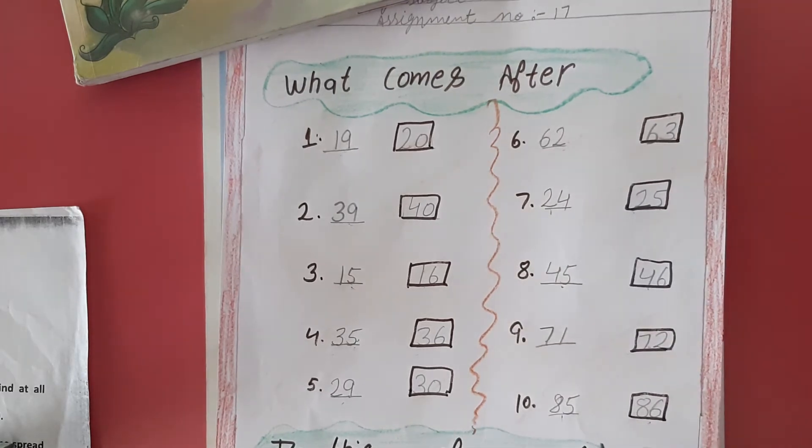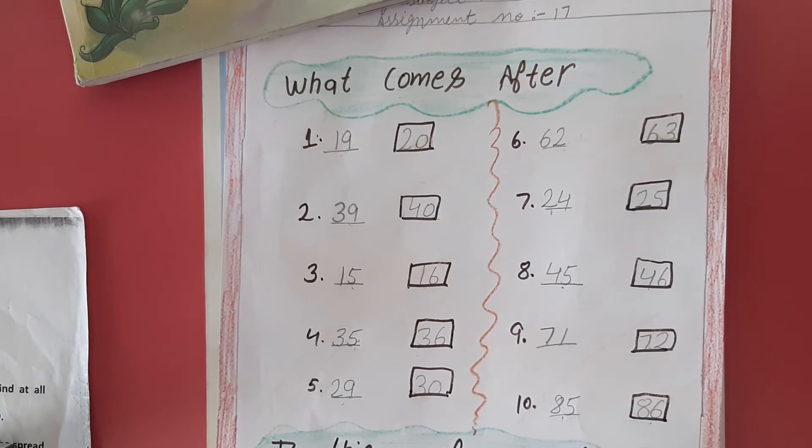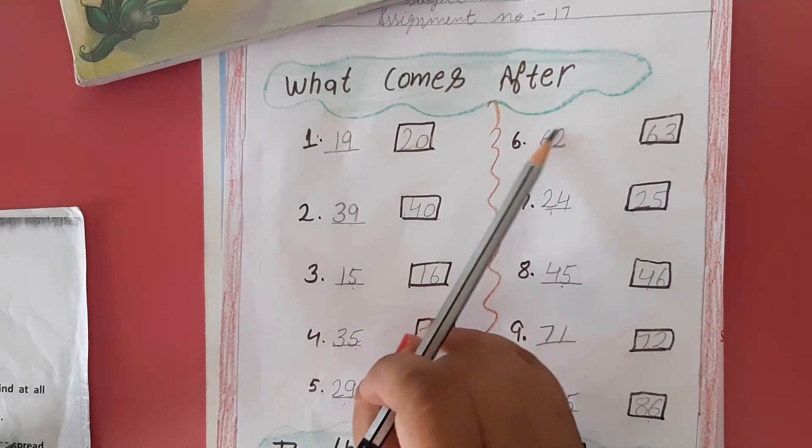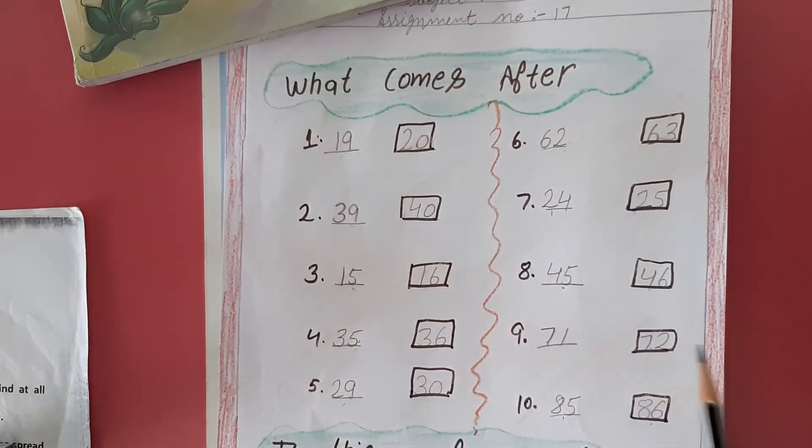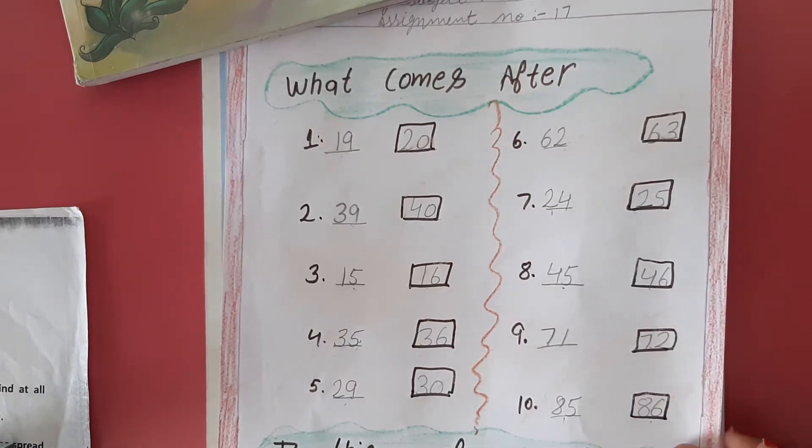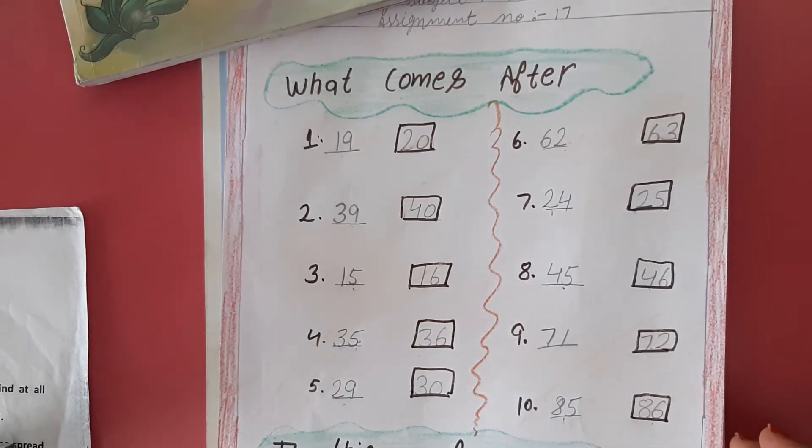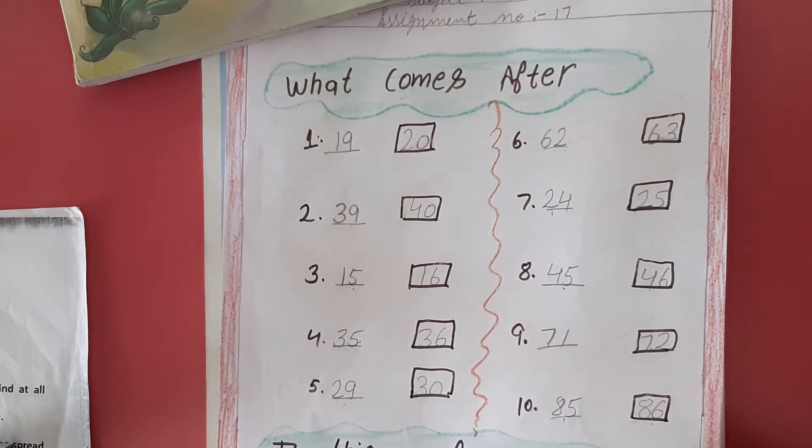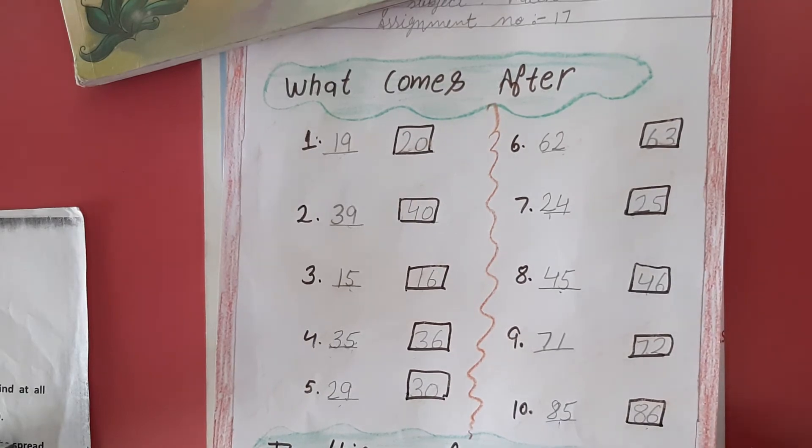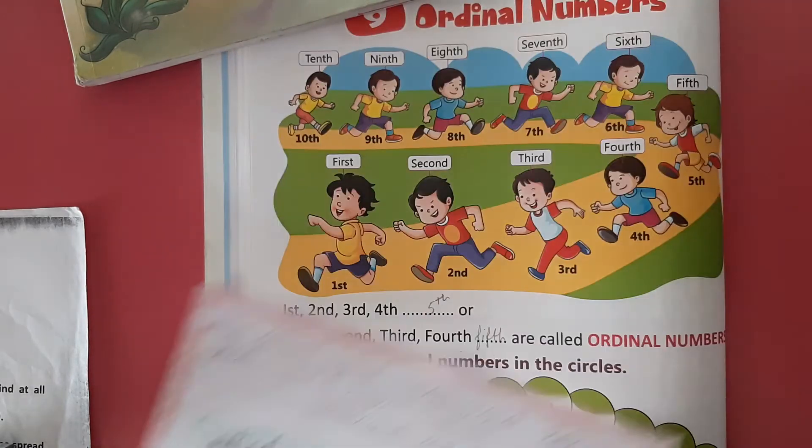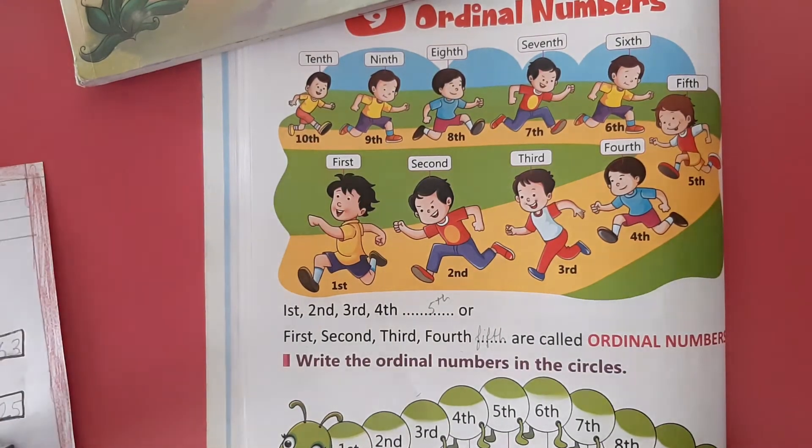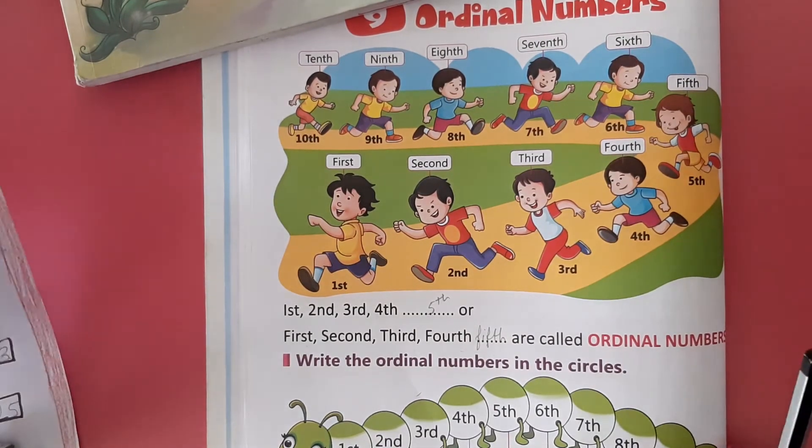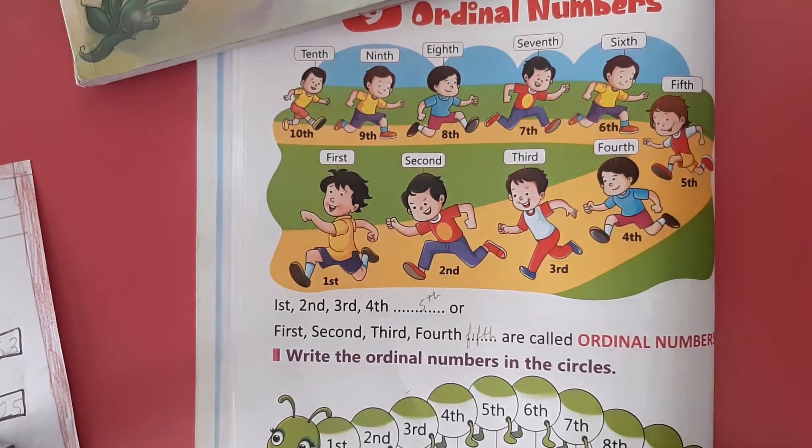Now you have to write down this 'What Comes After' exercise in your fair notebook with neat and clean handwriting. Next, from your book Math Mania, page number 26.